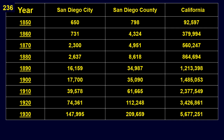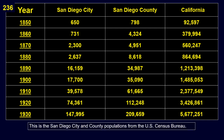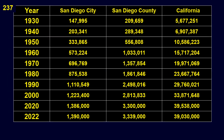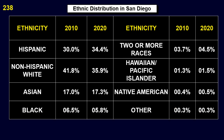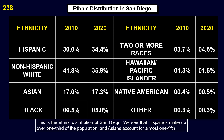This is the San Diego city and county population from 1850 to 2020, as reported by the U.S. Census Bureau. This is the ethnic distribution of San Diego. Hispanics make up over one-third of the population, and Asians account for almost one-fifth.